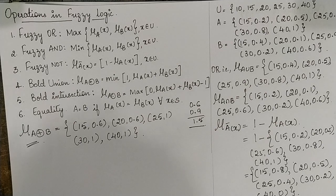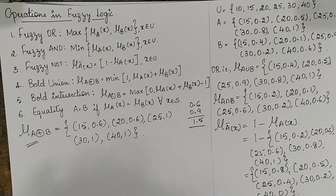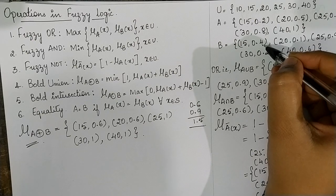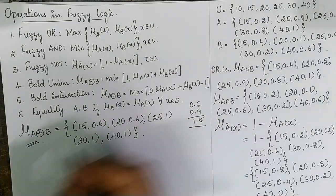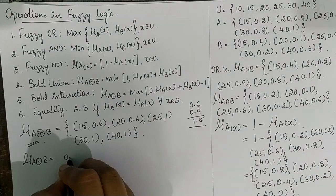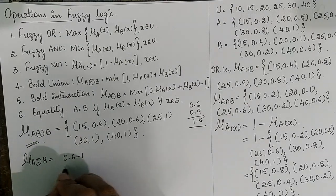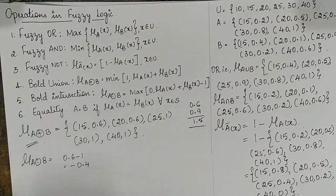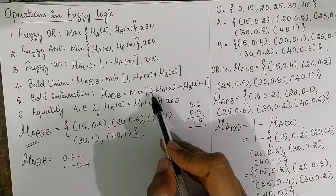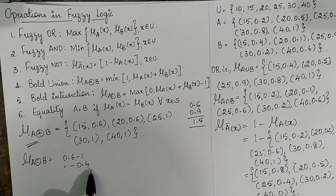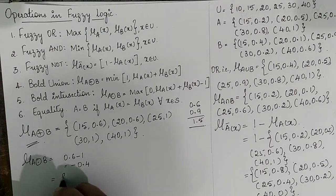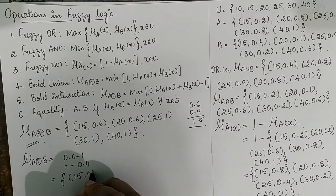The next is bold intersection. Here, first add the membership values, then subtract 1 from the result, then compare with 0 and take the maximum. For 15: 0.2+0.4=0.6; 0.6−1=−0.4. We do not consider negative values, so compare −0.4 and 0 — maximum is 0, hence 15→0. For 20: 0.5+0.1=0.6; 0.6−1=−0.4; maximum with 0 is 0, so 20→0.